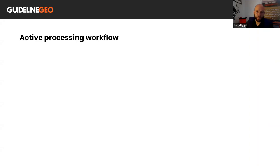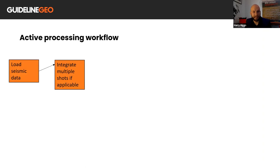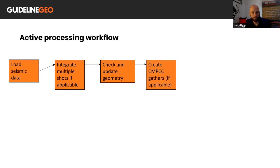So the active processing workflow. The aim with this is to set out a repeatable and reliable procedure for turning your raw data into final shear wave velocity sections. Step one would be to load the data into the software and if multiple shots were acquired, most software should allow the user to integrate multiple data sets into the working project. Step two would be to review the data and update any of the geometry settings. If using a fixed array and you want to use the CMPCC method, you should then calculate this once the geometry has been assigned, otherwise it can be skipped.